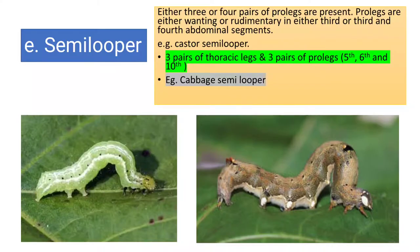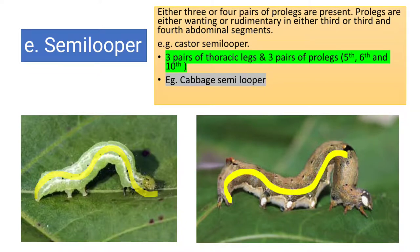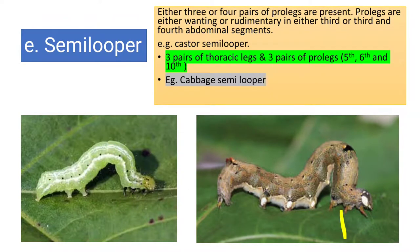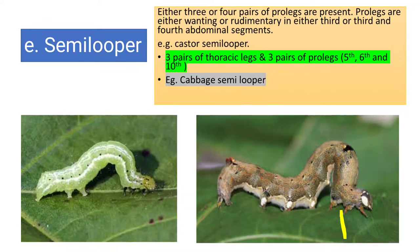Then comes the semi-looper. As you can see in the photo, it makes a semi-loop while moving. It has three pairs of thoracic legs, but only three pairs of pro-legs on the fifth, sixth, and tenth segments. The larva of the cabbage butterfly is a cabbage semi-looper.